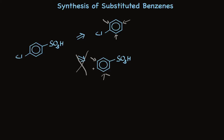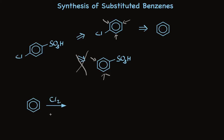Clearly, we need to use chlorobenzene as the precursor, which can be made directly from benzene. What remains is to show the synthesis from beginning to end including reagents. Using chlorine with ferric chloride puts the chlorine on the benzene ring, and SO3 with sulfuric acid and heat are the conditions we need to put the sulfonic acid group on. And there we have it.